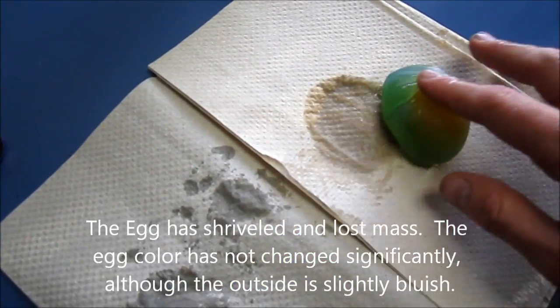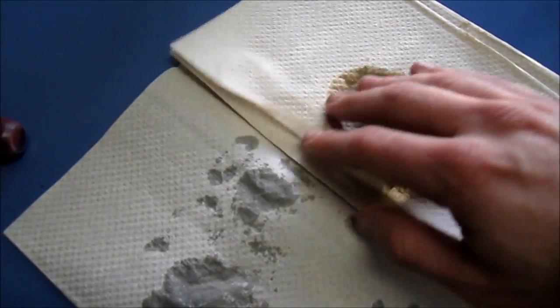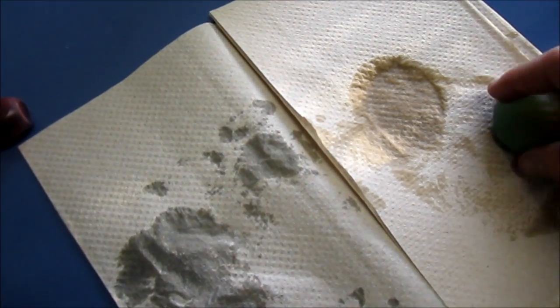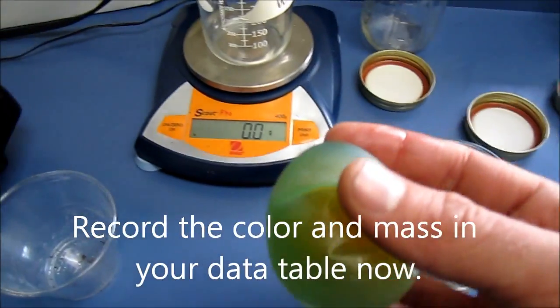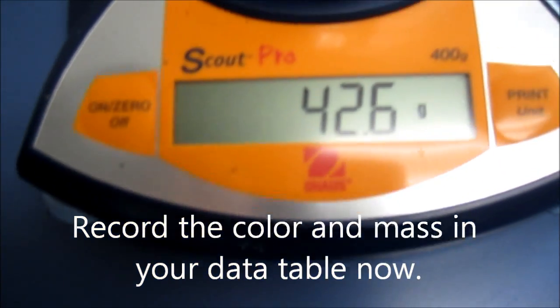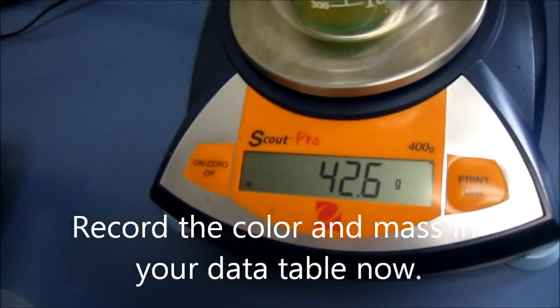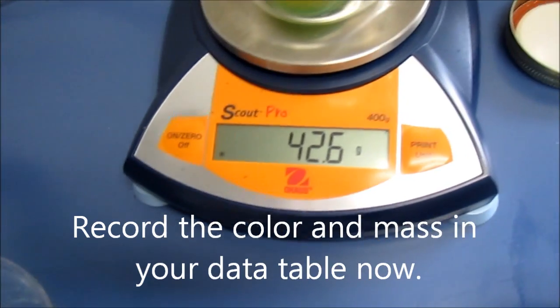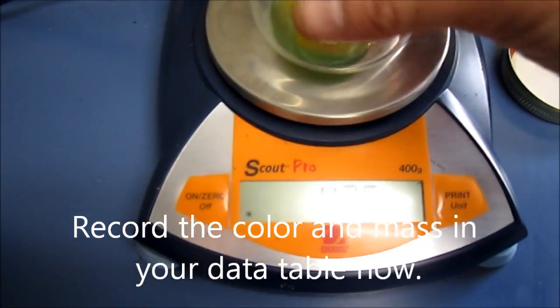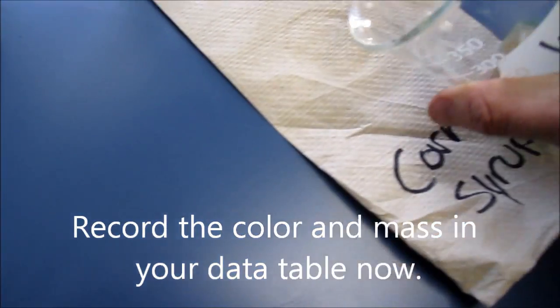It looks like it's lost mass, but we'll put it on the scale to confirm that. And the color is kind of bluish, but it's not like a dark blue. So what this looks like to me is there's just a little bit of staining of the outer membrane, and no blue food coloring actually went into the egg. As you can see, our final mass here is 42.6 grams. So go ahead and write that down. And also write down that the color you could say is slightly blue or barely bluish.